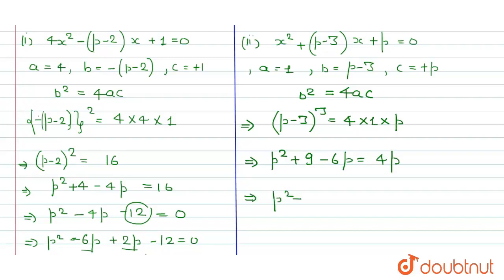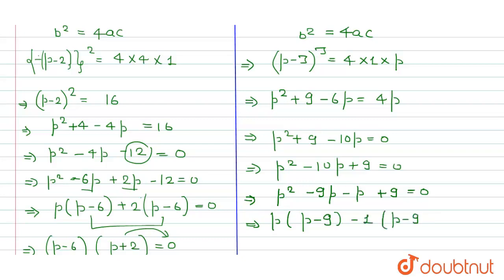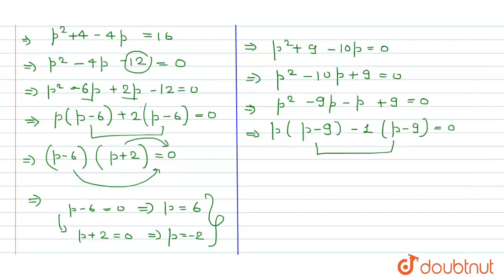Rearranging: p squared minus 6p minus 4p plus 9 equals zero, giving p squared minus 10p plus 9 equals zero. Using factorization, the LCM factors of 9 are 9 and 1, so we split minus 10p as minus 9p minus p. Taking p as common gives p(p minus 9), and taking minus 1 as common gives minus 1(p minus 9), making (p minus 9) a common factor.